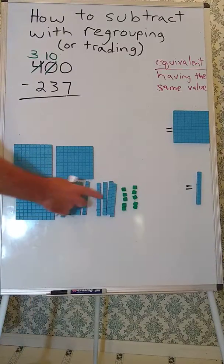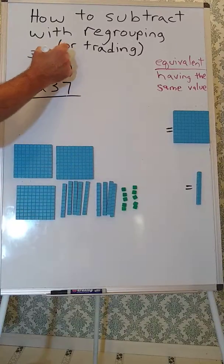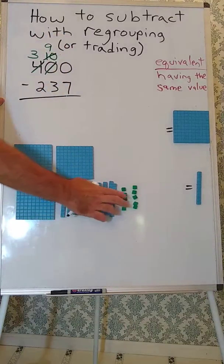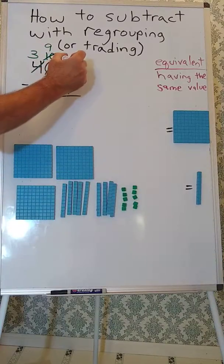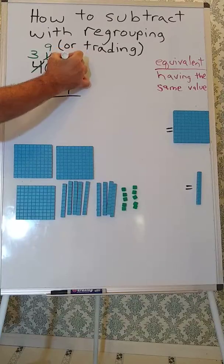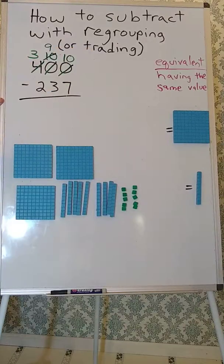What did we do? Well, we had 10 tens and we traded one, so now we have 9 tens. And what did we get? We got 10 ones for our 1 ten. So we had 0 ones before, now we have 10 ones. And I think we're ready to start the problem.